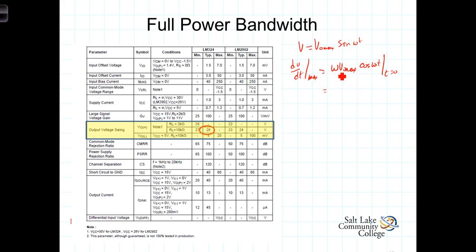So the maximum rate that this input is changing is omega Voutmax. Now, the frequency that makes this product, omega Voutmax, equal to the slew rate is known as the full power bandwidth, and we're going to call it omega sub m. So omega sub m is equal to the slew rate divided by Voutmax.